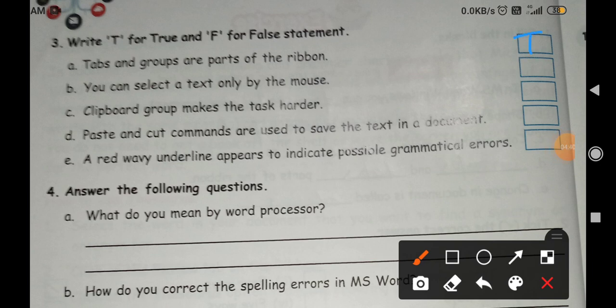Next, you can select a text only by the mouse. No, you can select with the help of keyboard also and mouse. It means you can use mouse and keyboard to select any word, any sentence, any text. So this is false.